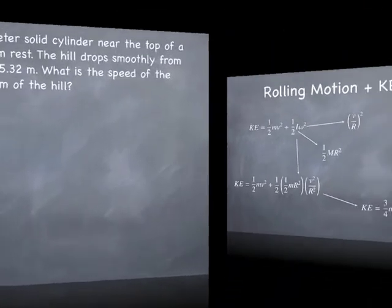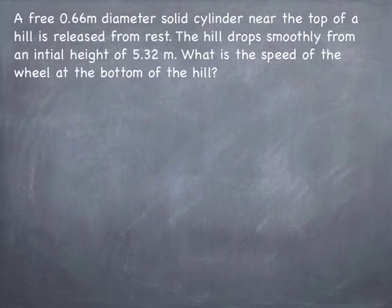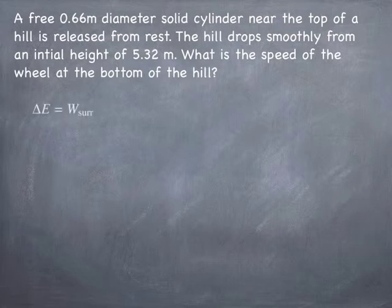So let's do an example. Imagine we have a solid cylinder at the top of a hill and it rolls down the hill. And given that it starts at rest, we want to know how fast it's going at the bottom. So the idea here is to apply the energy principle. The change in the energy of the system is equal to the work done on the system by the surroundings.